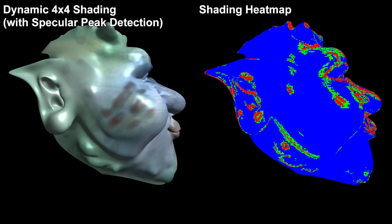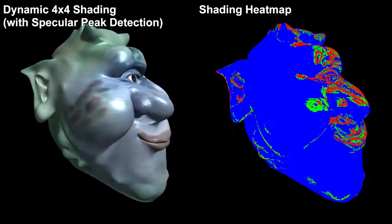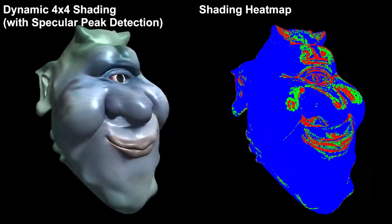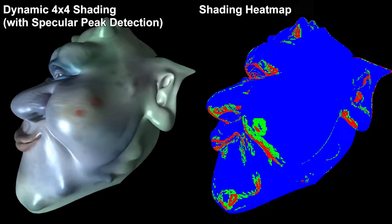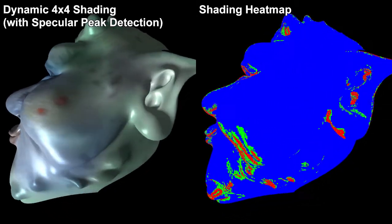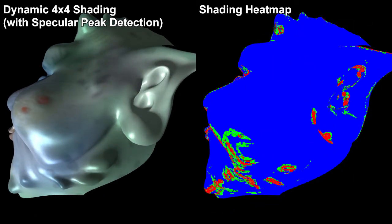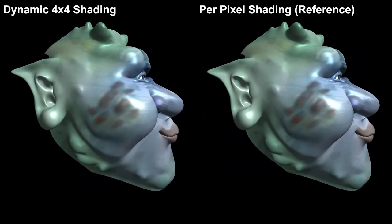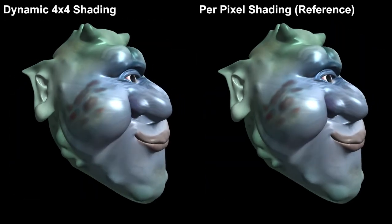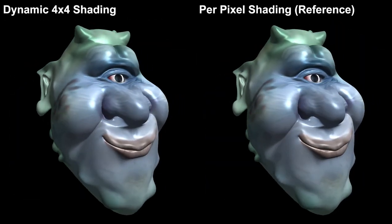Using specular peak detection, the adaptive shader will only refine shading near highlights, which reduces the number of refinements that occur. Notice that most regions in the heat map are now blue. Here is a side-by-side comparison with the reference rendering.